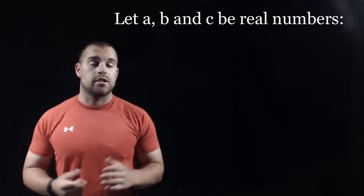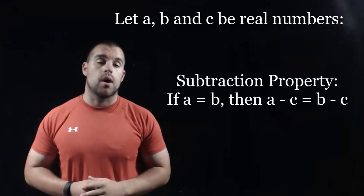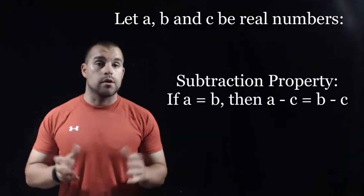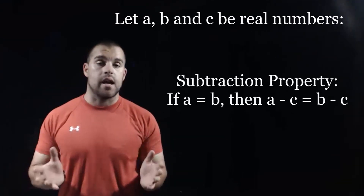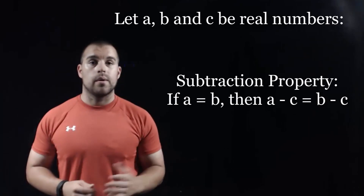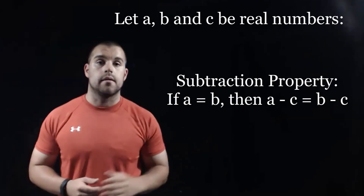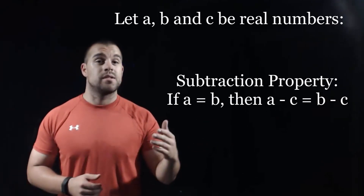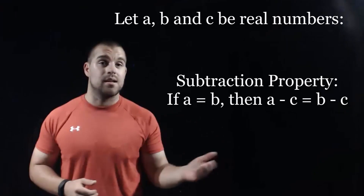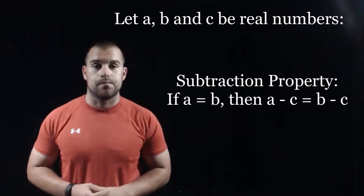Our next property is the subtraction property. We're going to start with if A equals B, then what we could do is subtract C from both sides of that equation. So then it would say A minus C equals B minus C.